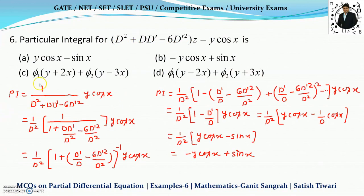The PI will be given by 1 upon this function of D and D dash into y cos x. Here y is present which is having the degree 1. Therefore, we will expand this by using the binomial expansion in the powers of D dash by D because derivative of y is 1 and the second derivative will be 0. I take the D square common from the denominator. This can be written as 1 plus DD dash by D square minus 6D dash square upon D square into y cos x.